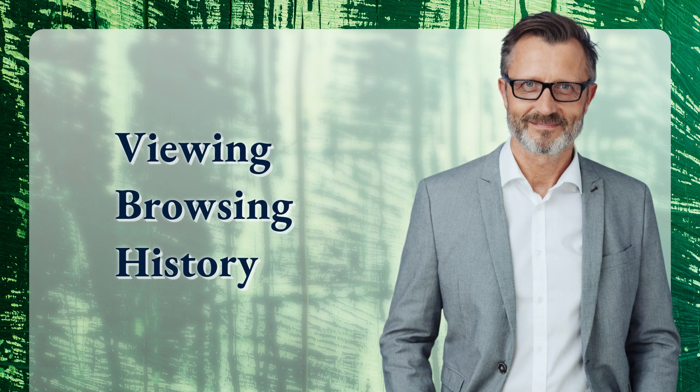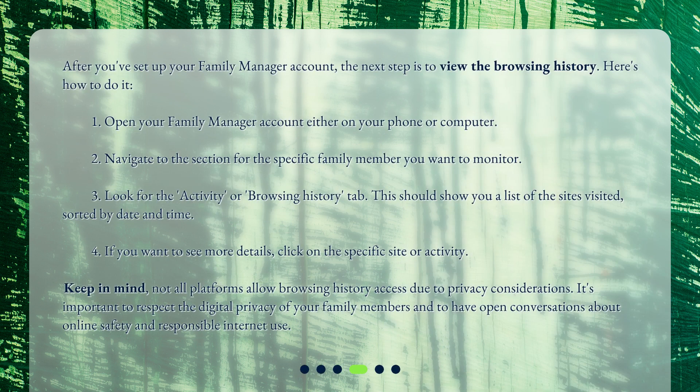After you've set up your Family Manager account, the next step is to view the browsing history. Here's how to do it: 1. Open your Family Manager account either on your phone or computer. 2. Navigate to the section for the specific family member you want to monitor. 3. Look for the Activity or Browsing History tab. This should show you a list of the sites visited, sorted by date and time.